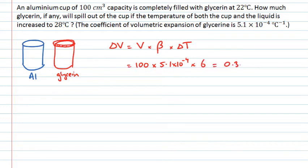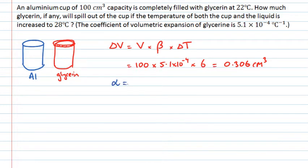So 0.306 cm³ is how much the glycerin's volume has changed. If the aluminium cup didn't expand at all, that would be how much fluid spilled. However, aluminium does expand. The coefficient of linear expansion for aluminium is 23 × 10⁻⁶ per degree Celsius.